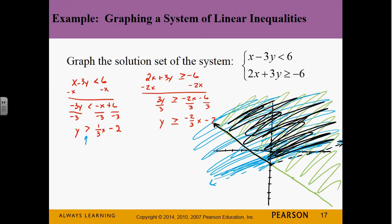You can use test points to verify. Plug (0, 0) into the first: 0 minus 0 less than 6 — yes. Plug into the second: 0 plus 0 greater than negative 6 — yes. So (0, 0) works for both, meaning that region is the solution. You're looking for something that's in both shaded regions — only one region satisfies both inequalities simultaneously.